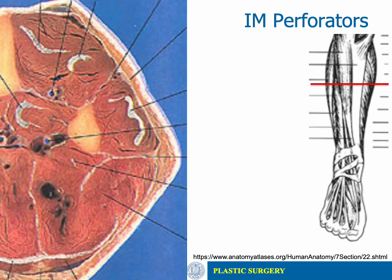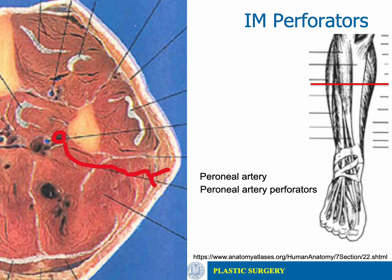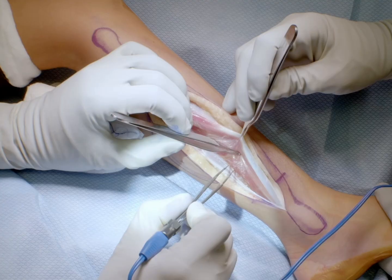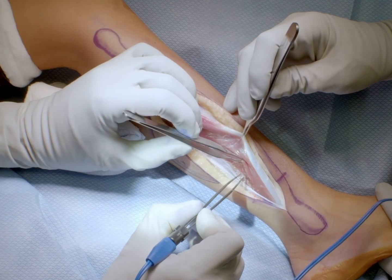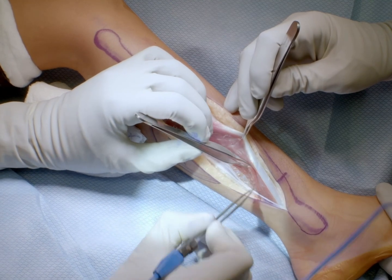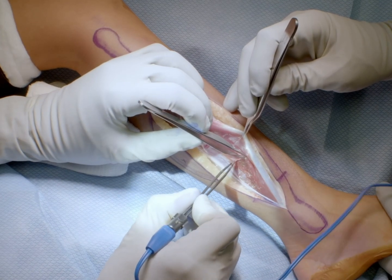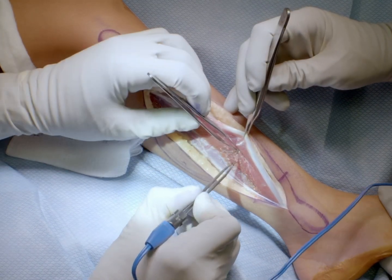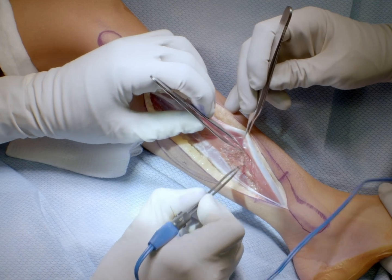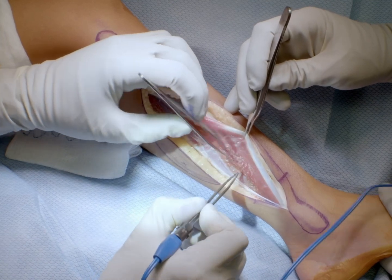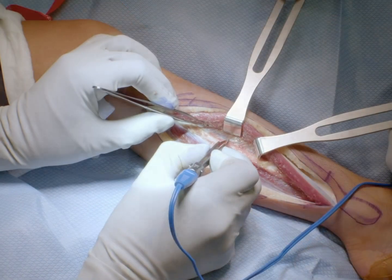If no perforators are seen at the septum, they may instead course intramuscularly through the FHL and soleus muscle, and will be identified at the posterior incision. Continuing anteriorly, we proceed with electrocautery, leaving a one to two millimeter cuff of the peroneus longus and brevis on the bone to strictly avoid injuring the periosteum. The goal is to reach the intramuscular septum between the lateral and the anterior compartment.